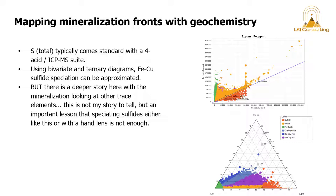So sulfur total typically comes standard with a 4-acid ICP-MS suite. Using bivariate and ternary diagrams, like we have iron, copper, sulfide speciation can be approximated. But there is a deeper story here with the mineralization looking at other trace elements.